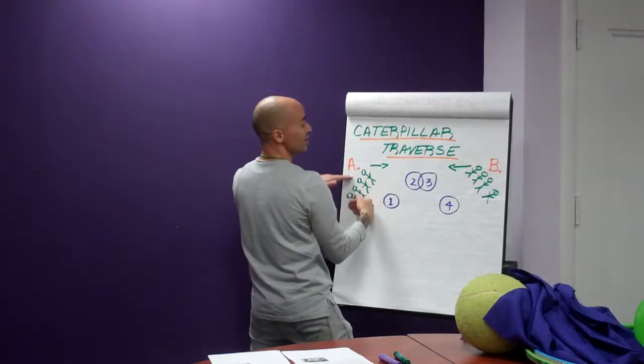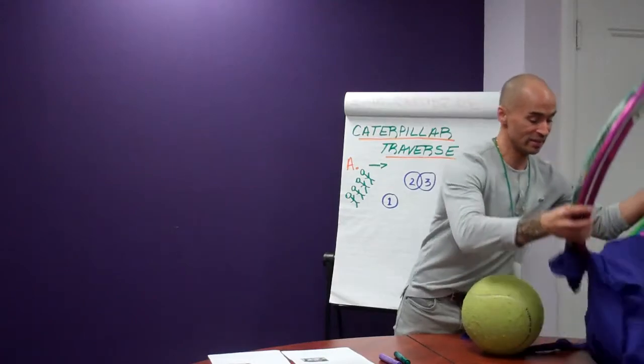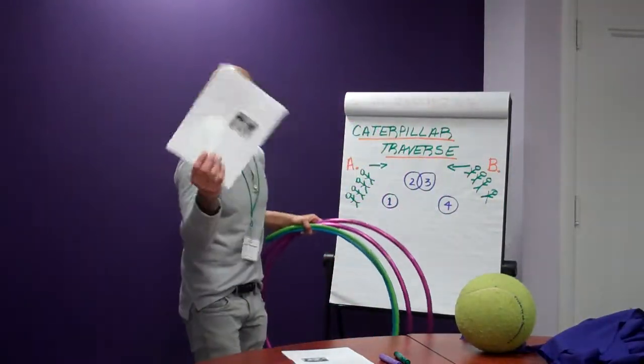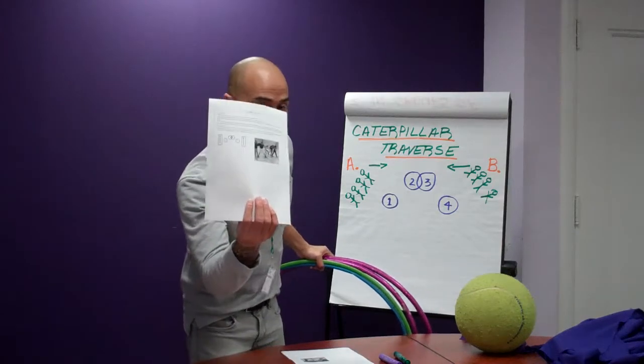So group B is going to try to come over here. Group A is going to try to come over here. And what you're going to get in this activity, you're going to get some hula hoops. Now of course you're going to have a diagram, so something that you can see up close.